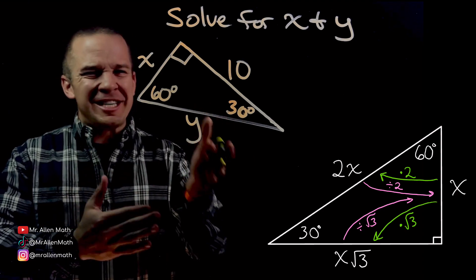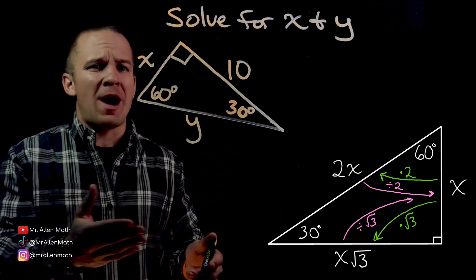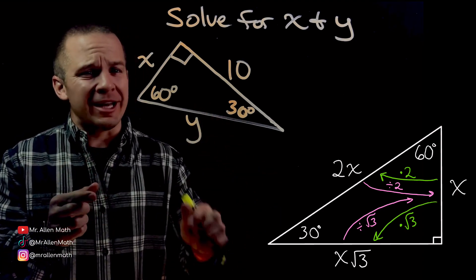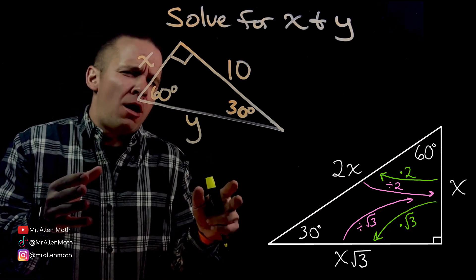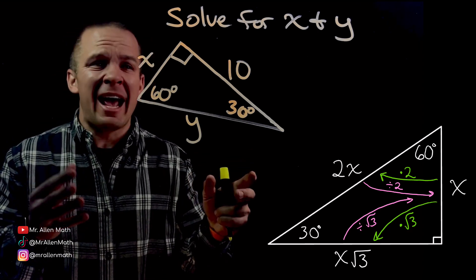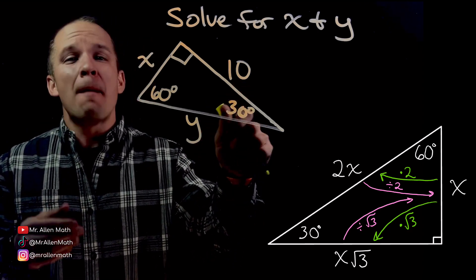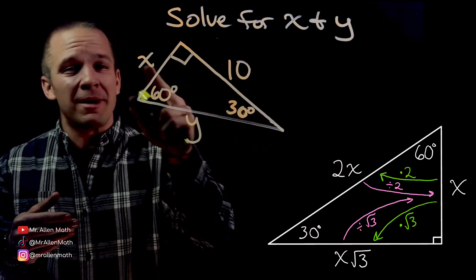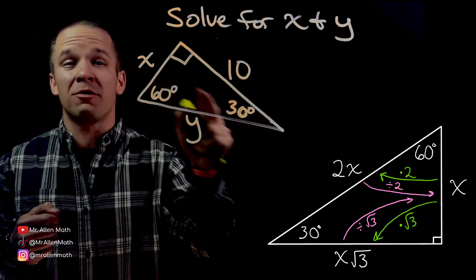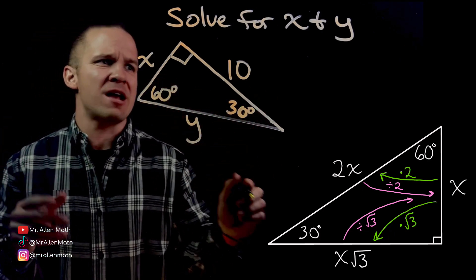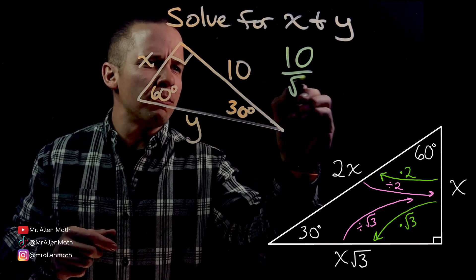I'm about to solve this 30-60-90 triangle for X and Y, but unfortunately I've got the side that's across from my 60 degree angle. That's the worst one to have, because I've got to divide by root three to get my short side, which is across from my 30 degree angle. I'm going to take 10 and divide it by root three.